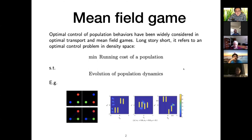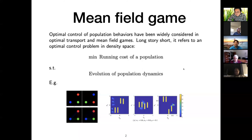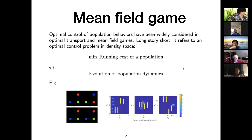Mean field games — the optimal control of population behavior — is important in optimal transport and mean field games. It refers to a control problem in density space: you minimize the running cost of a population such that there are constraints on the evolution of population dynamics. For example, you can see dots rotating, and tufts of smoke representing densities moving across and avoiding obstacles. Mean field games are essentially a control problem where you're looking at densities. It's a very important subject with many applications. We'll talk about numerical aspects with a little bit of theory.